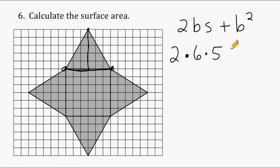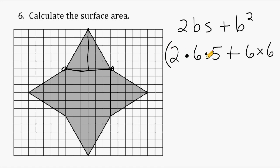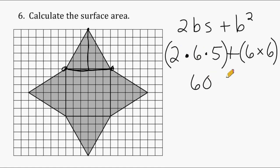We add the area of our square base, calculated by taking the base of 6 and multiplying it by itself. Remember, when you have more than one operation, we follow the order of operations, which means we perform all multiplication before addition. So 2 times 6 is 12, and 12 times 5 gives us 60. Plus we have 6 times 6, which is 36. Adding these two results gives us a total surface area of 96 square units.